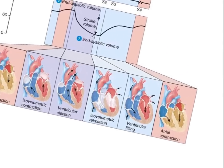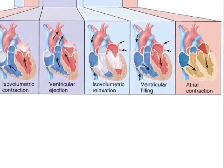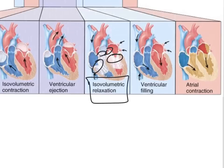Examining the state of the valves now during this phase — the AV valves were previously closed when the ventricular pressure exceeded that of the atria, and now the semilunar valves have closed as well. So once again, all valves in the heart are closed, which means no blood is leaving the ventricle. This is a state of isovolumetric relaxation, because the ventricle is in diastole — it is repolarized and relaxing.